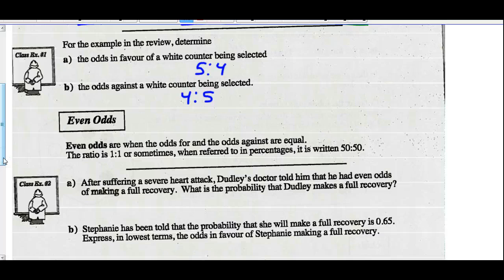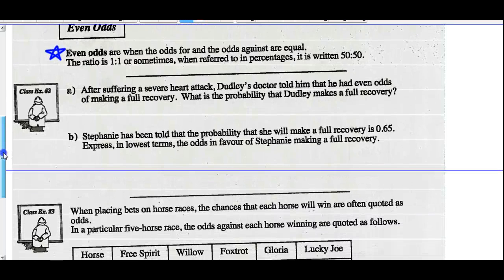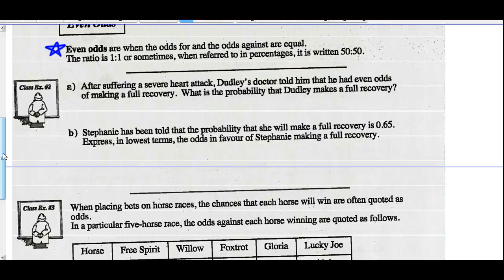Note, even odds are when the odds for and against are equal. The ratio is one to one, or sometimes, when referred to in percentage, it's written as 50-50. Example two, after suffering a severe heart attack, Dudley's doctor told him that he had even odds of making a full recovery. What's the probability that Dudley makes a full recovery? So even odds would mean that his odds are one to one. If we're talking about probability, then, probability would be one favorable out of two possible.